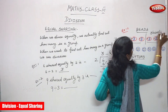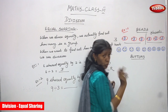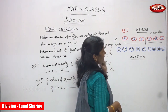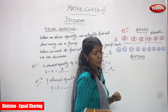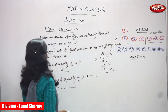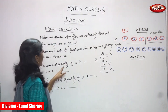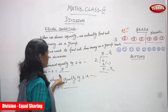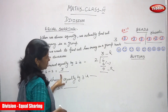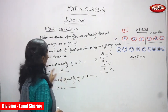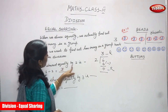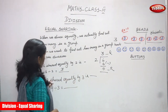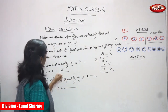How many groups? You can get 2 groups. But in each group, how many? That is what equals sharing. 6 shared equally by 2, you can get 3. That is the answer: 3. 6 shared equally by 2 equals 3.